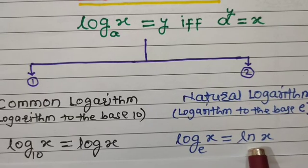Rules of logarithm. Rule number 1 is the product rule: the logarithm of the product of two numbers m and n to the base b is equal to the logarithm of m to the base b, plus the logarithm of n to the base b. That is, log base b of (m into n) equals log base b of m plus log base b of n.